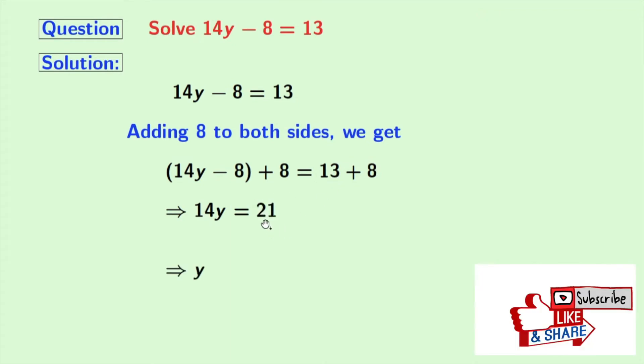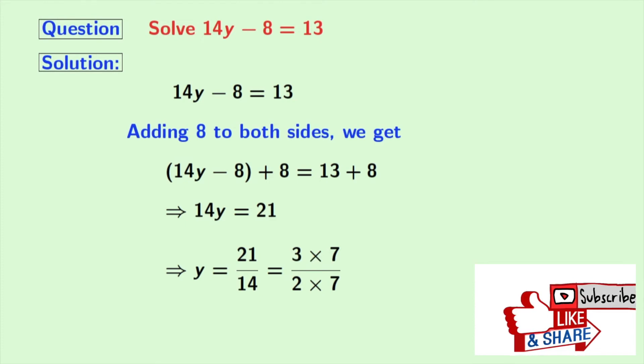So y is equal to 21 by 14. Now we can write 21 as 3 times 7 and 14 as 2 times 7.